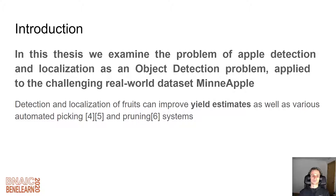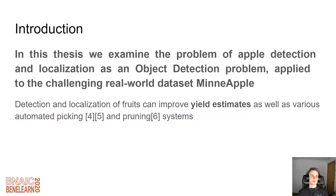Why are we doing this? In this thesis we examine the problem of apple detection and localization as an object detection problem, and we apply this to the real-world dataset MinApple provided by the University of Minnesota's Horticultural Research Center. By being able to detect and localize fruits from an image or a video stream, we can improve yield estimations, have various automated picking machines, pruning systems, and disease detection systems — all of which can help us decrease the amount of food waste in the production of fruit and vegetables.